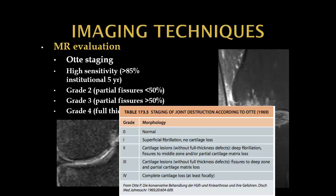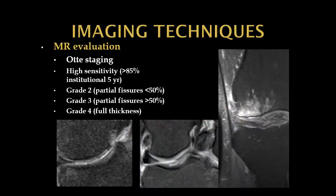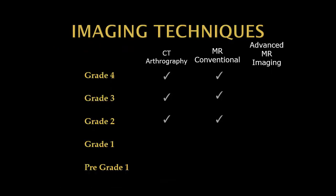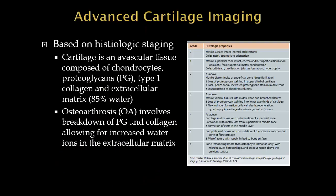Currently, most of us use a staging system presented by Dr. Outerbridge in 1969, based on morphologic evaluation of the cartilage — normal being grade 0, grade 2 being cartilage fissures less than 50%, and grade 4 being complete cartilage loss. On routine MRI, we can see grade 2 irregularity, grade 3 delaminating fissures, and full-thickness defects. But what about grade 1 and pre-grade 1? That's where advanced cartilage imaging comes in.